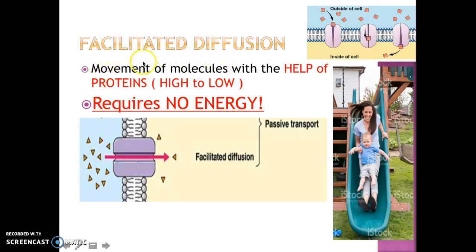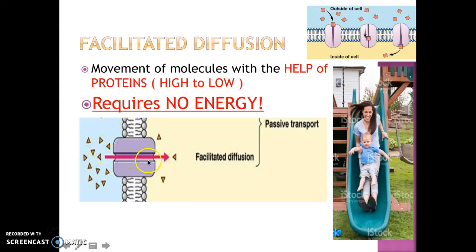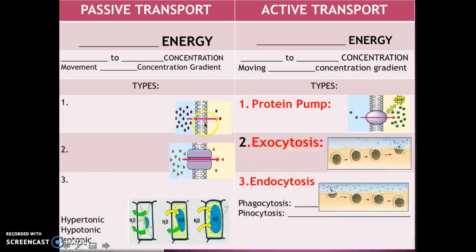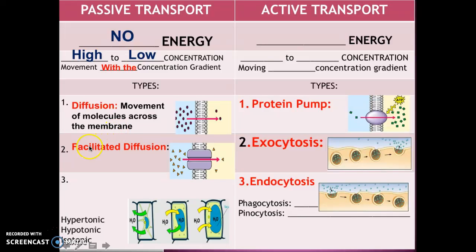The next type is facilitated diffusion. Facilitated diffusion is the movement of molecules with the help of a protein channel. It is exactly the same as diffusion, with the only difference being that we now have to use a protein channel because we are moving larger molecules. These larger molecules cannot fit through the phospholipids, so they have to fit through the protein channel. Everything else is the same.